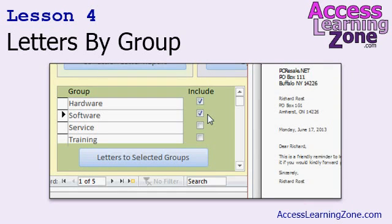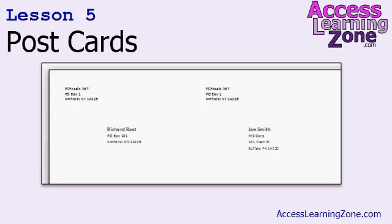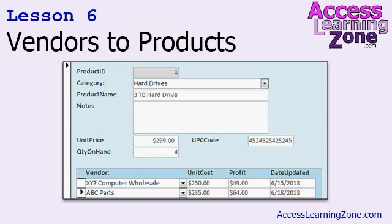Now that we have our groups set up and we have our customers assigned to groups, in lesson four we're going to create a subform on our letter form, so we can generate letters to the selected groups. In lesson five, we're going to learn some new manual report design techniques and generate postcards. In lesson six, we're going to see another example of a many-to-many relationship with vendors to products, where each vendor will sell you multiple products, and each product can be purchased from multiple vendors.